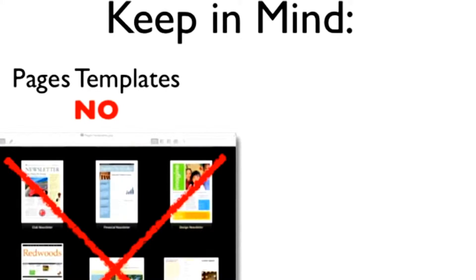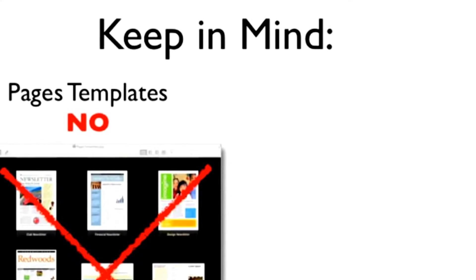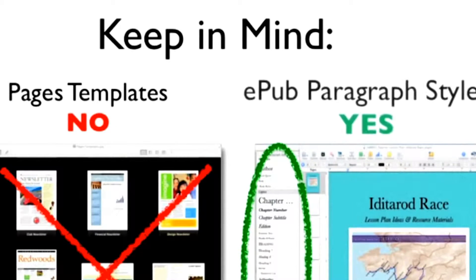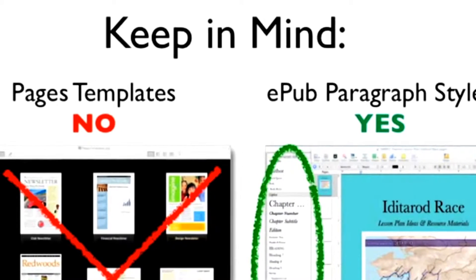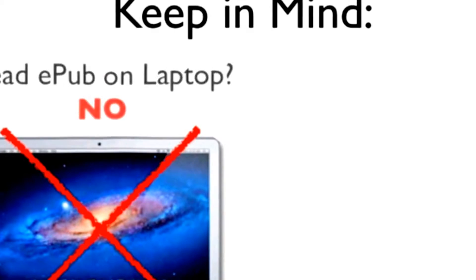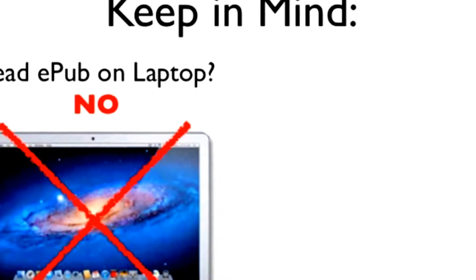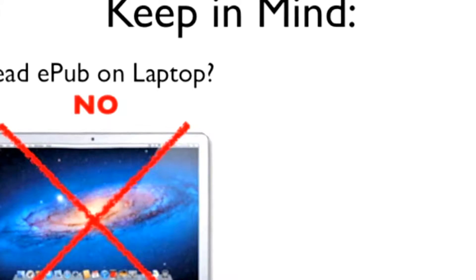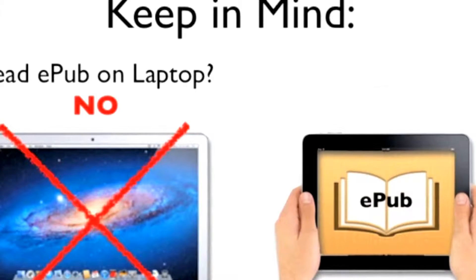A couple of things to keep in mind when creating an EPUB digital book: first, documents created using the regular Pages layout templates you may be familiar with cannot be exported to the EPUB format. Pages requires specific paragraph styles to be followed to successfully export an EPUB digital book. Secondly, digital books created in Pages cannot be read on a computer.